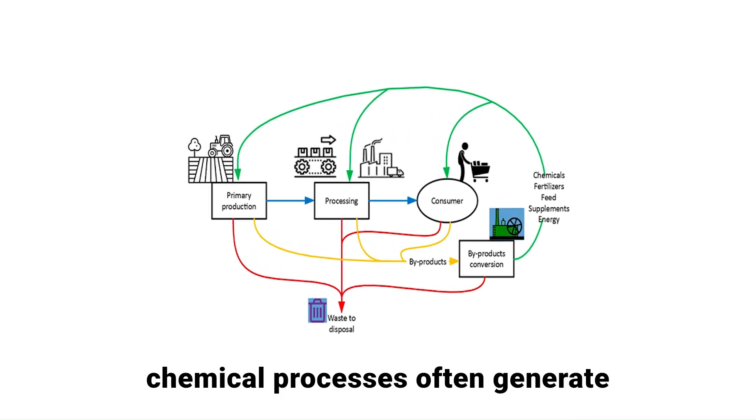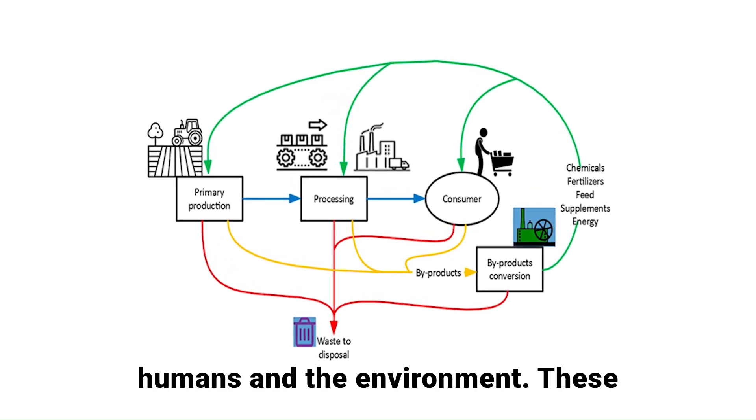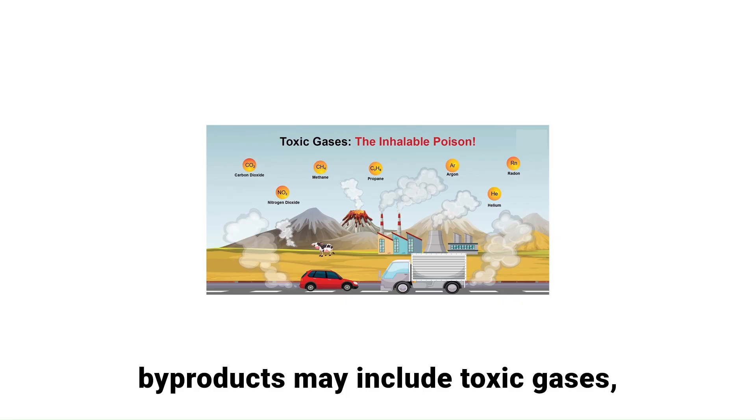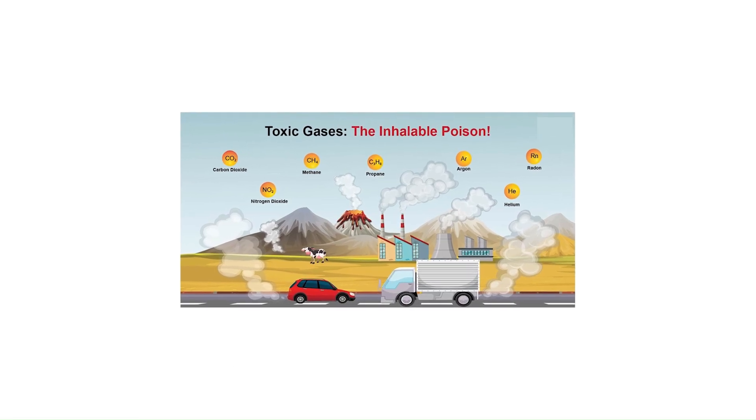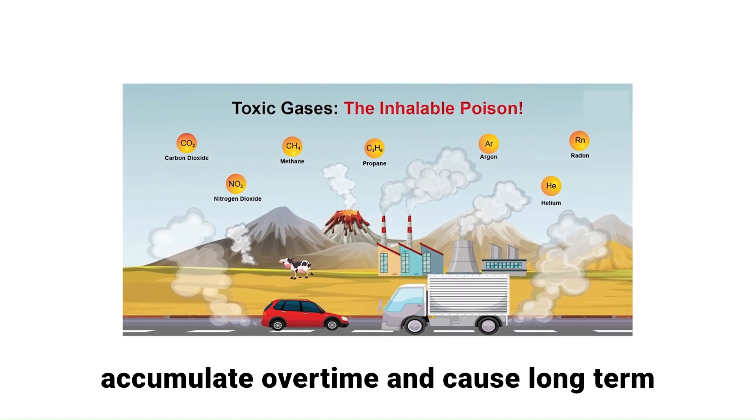Traditional chemical processes often generate by-products that are harmful to both humans and the environment. These by-products may include toxic gases, hazardous waste or pollutants that accumulate over time and cause long-term damage.